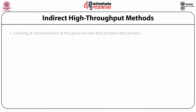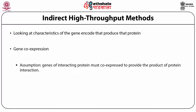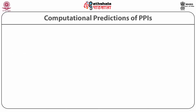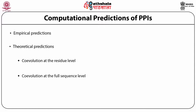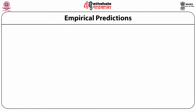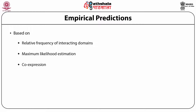Indirect high-throughput methods look at the characteristics of genes encoding the proteins, such as gene co-expression. The assumption is that genes of interacting proteins must co-express to provide the products for protein interactions. Computational predictions of PPI can be empirical or theoretical. Empirical predictions are based on relative frequency of interacting domains, maximum likelihood estimations, and co-expression. A disadvantage is that these methods rely on existing networks and may propagate inaccuracies.